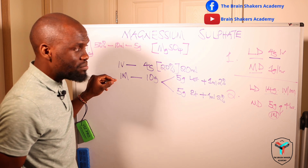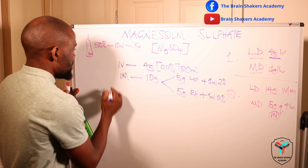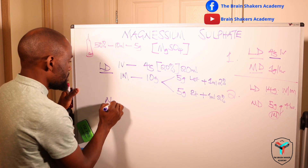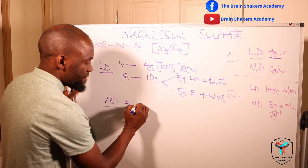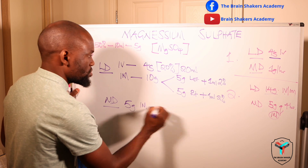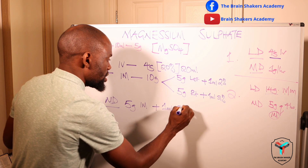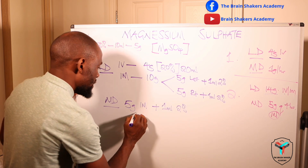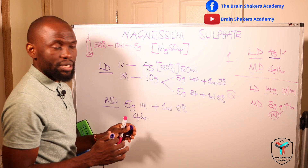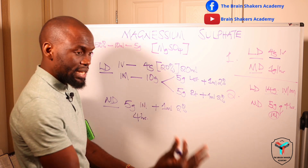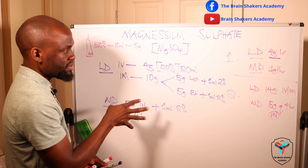For the maintenance dose using the IM route, you give 5 grams IM every 4 hours, also adding 1 mL of 2% lignocaine. Administer in alternate buttocks — left this time, right the next. That covers both methods of administering magnesium sulfate.